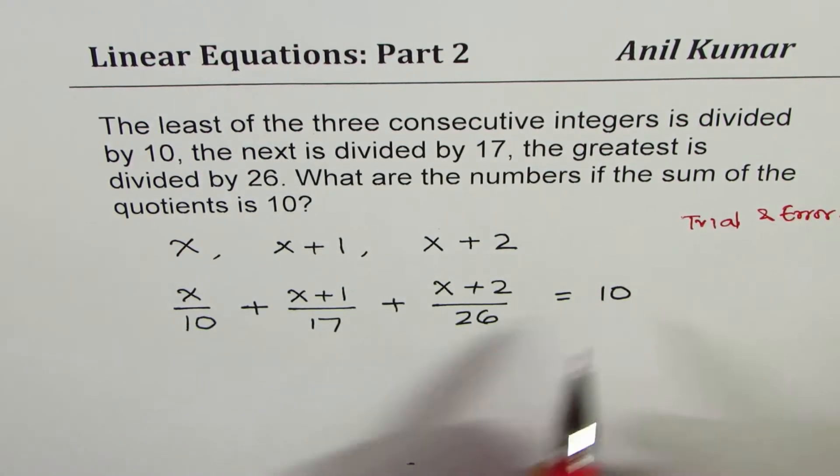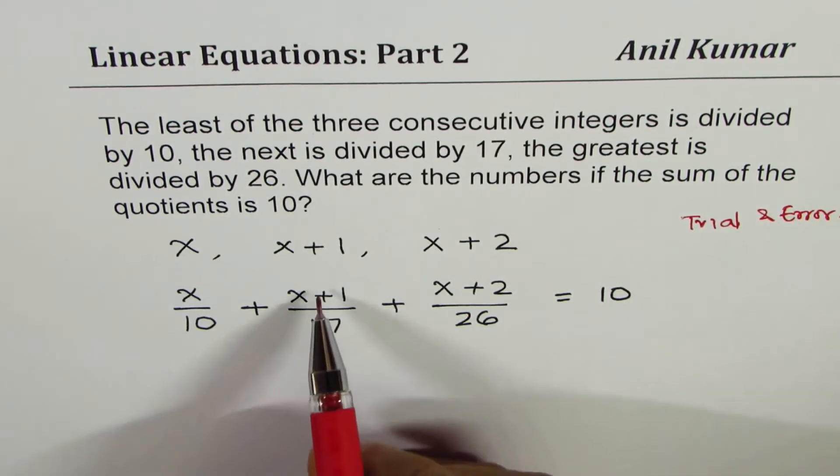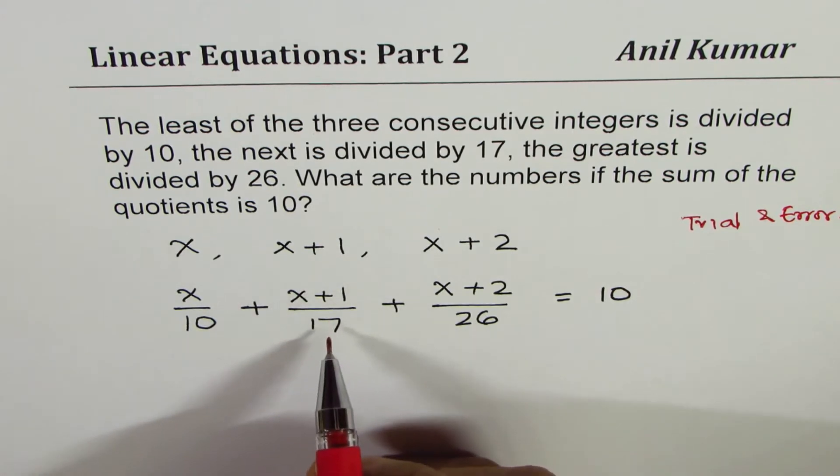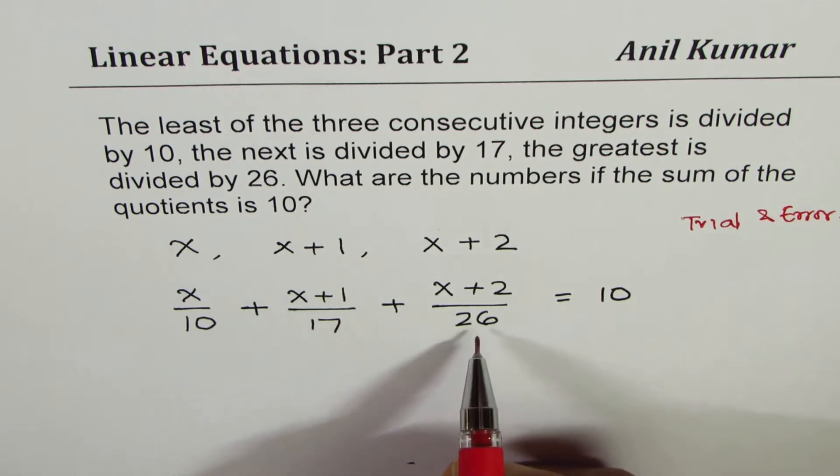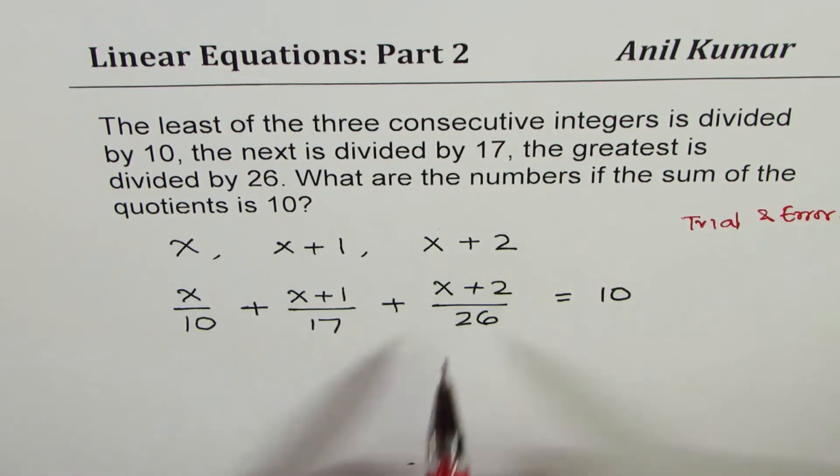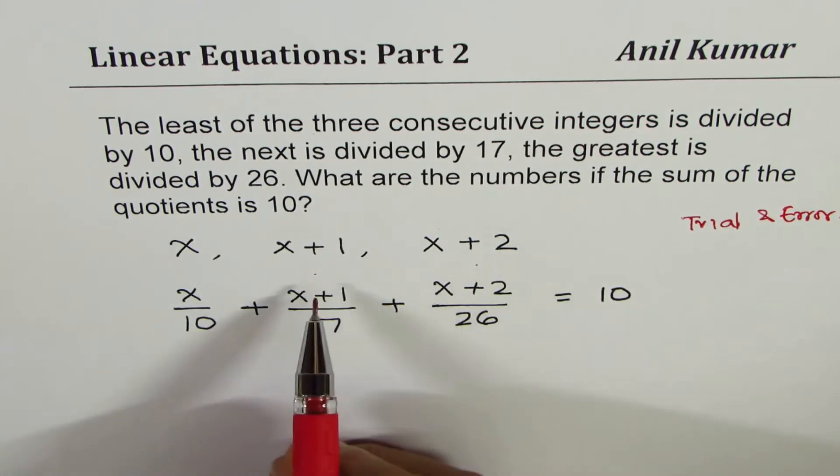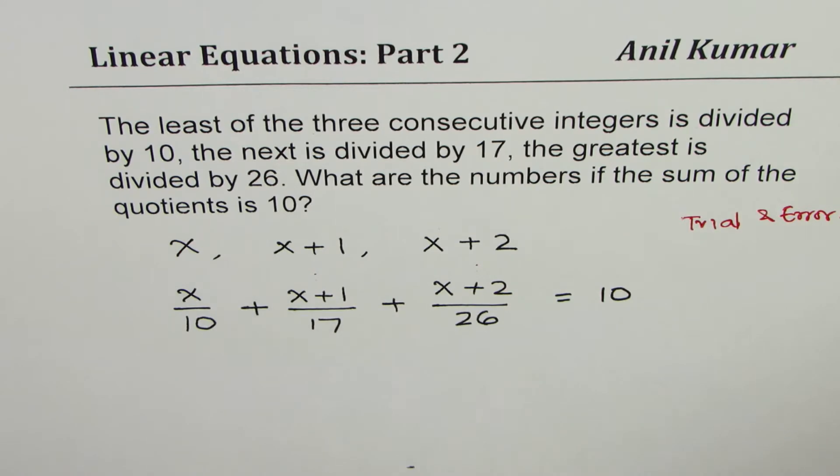Since we are looking for a whole number, let's look for multiples of these numbers. So of course, total is 10, sum of three numbers is 10. So each number has to be less than 10. So let's try. If I do 17 times 2, I get 34, for example. So x plus 1 could be 34. If I do 26 times 2, I get 52. So what I'm trying to say here is we could try to see some values here and then work out the example. So if I have something like 2 plus 3 is 5 plus 5 is 10, do you get an idea? So we could do something like that because these numbers have to be close by.